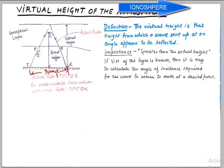The virtual height is that height from which a wave sent up at a certain angle appears to be reflected.